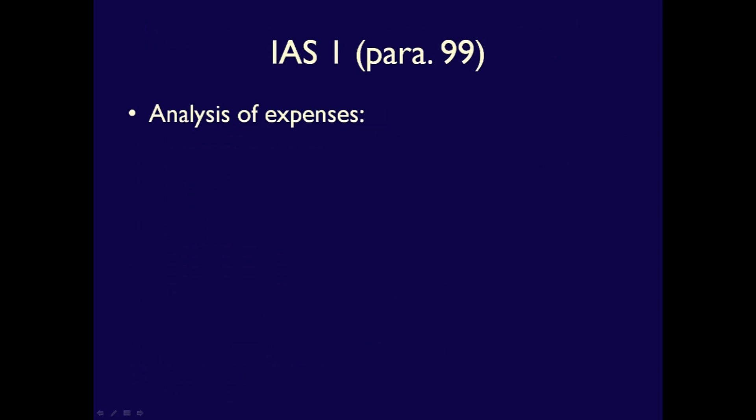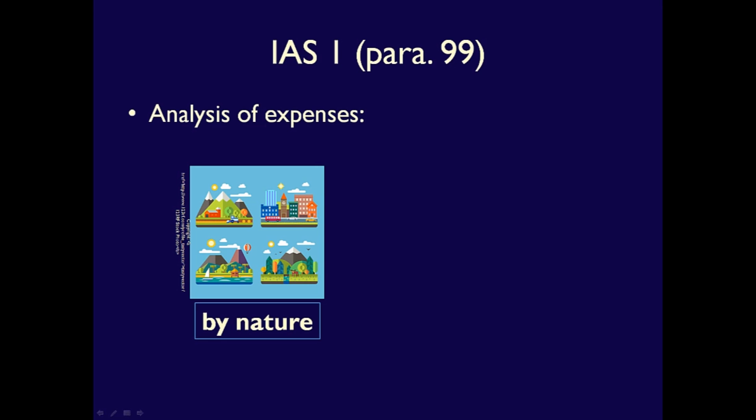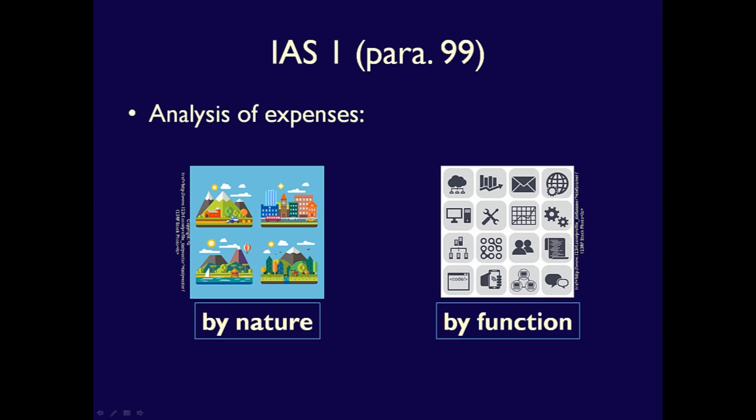In addition, IAS 1, in paragraph 99, recommends that the Statement of Income, Comprehensive Income include an analysis of the expenses classified in one of two ways: by nature or by function.